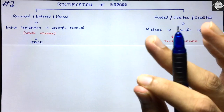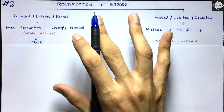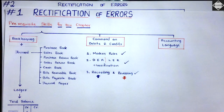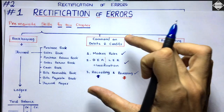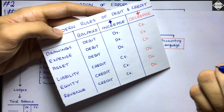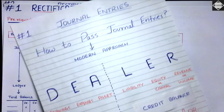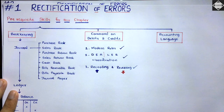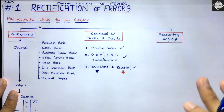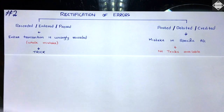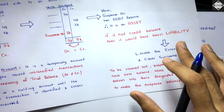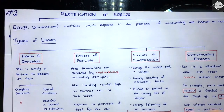Before going ahead, let me recap what we covered in the first video. We started with the prerequisite skills: you must have complete understanding of bookkeeping — the step from journal to trial balance — and you must have command on debits and credits. You should know the modern rules of debit and credit, the DEALER classification, and be able to categorize everything into those six categories, knowing their balances and the rules to apply on them.